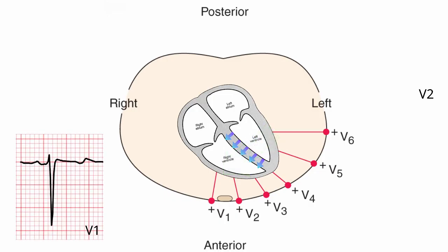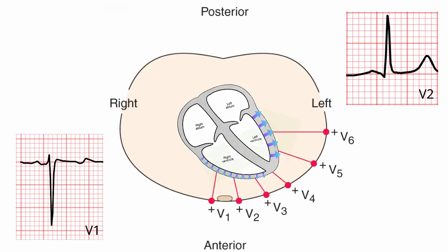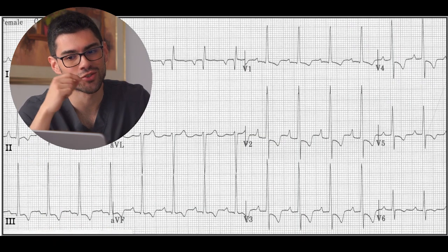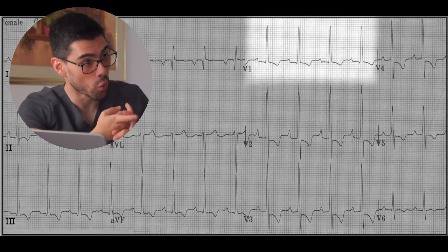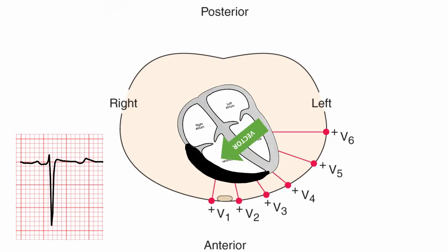That's why you see a small R wave — a small positive wave — in V1 and a small S wave in V6. After that, the ventricles themselves depolarize, and although they both do this simultaneously, the left one is bigger, so the overall vector goes that way. That explains why there's a big S wave in some leads and a big R wave in others. So that's why the QRS becomes positive in V1 in cases of right ventricular hypertrophy — because the enlarged right ventricle makes the vector point towards V1 instead of towards V5 and V6. Yep, that's the reason.